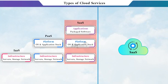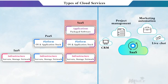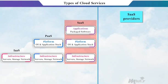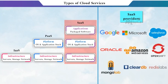Other examples of SaaS apps are customer relationship management (CRM), project management, marketing automation, live chat, help desk, invoice applications, analytics, email marketing, and many more. The service providers for SaaS are Google, Microsoft, Salesforce, Oracle, Amazon Web Services, OpenShift, and many more.